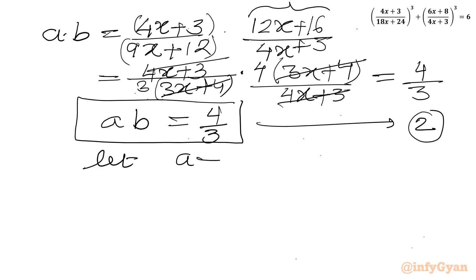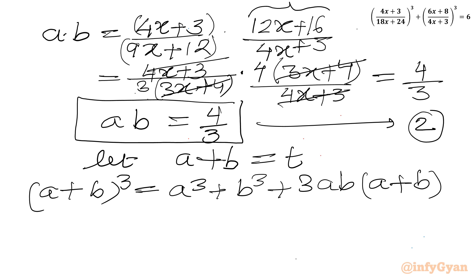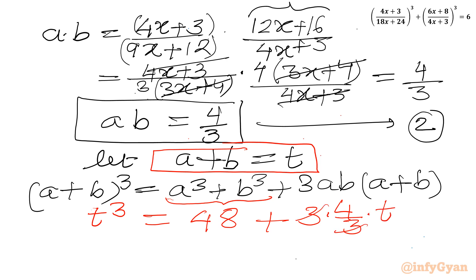Let us consider a + b = t. Now I can use the (a+b)³ formula: (a+b)³ = a³ + b³ + 3ab. With a + b = t, the left-hand side is t³, and substituting equation 1 and equation 2: t³ = 48 + 3 times (4/3) times t. So we can write t³ − 4t − 48 = 0.